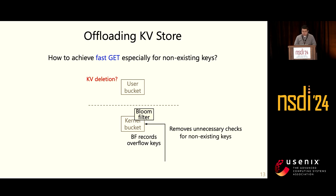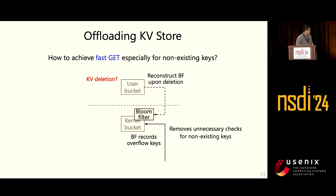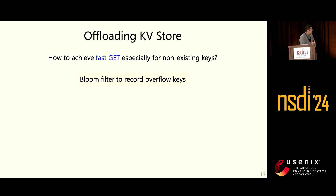There is also a tricky case: what if some workloads delete overflow keys? Bloom filters are known to not support deletion. Our high-level approach is to let user space handle that — user space reconstructs the bloom filter and then updates it in the kernel through the previously mentioned eBPF bookkeeping program in the rare cases. That is how we achieve fast get.